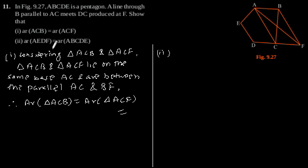Show that area of AEDF is equal to area of ABCDE. Now as we have proved in the first part that area of triangle ACF is equal to area of triangle ACB.